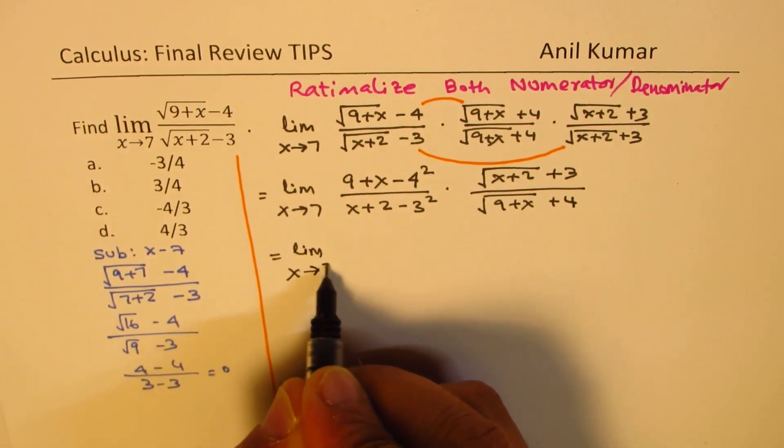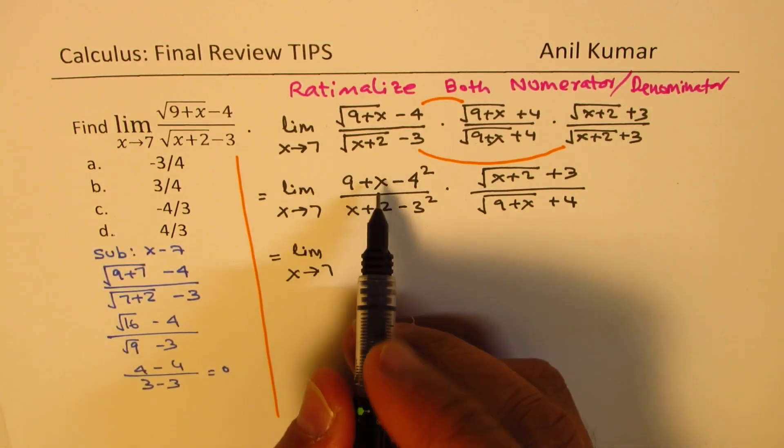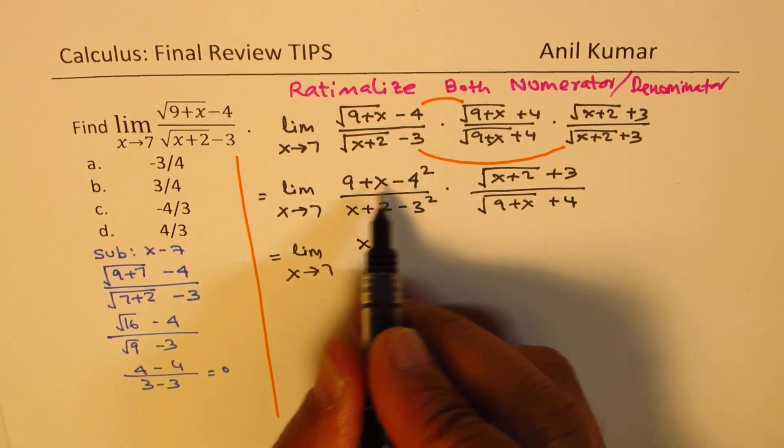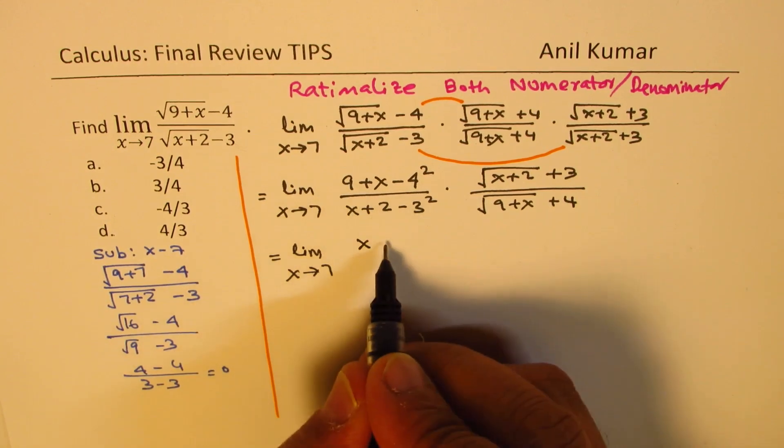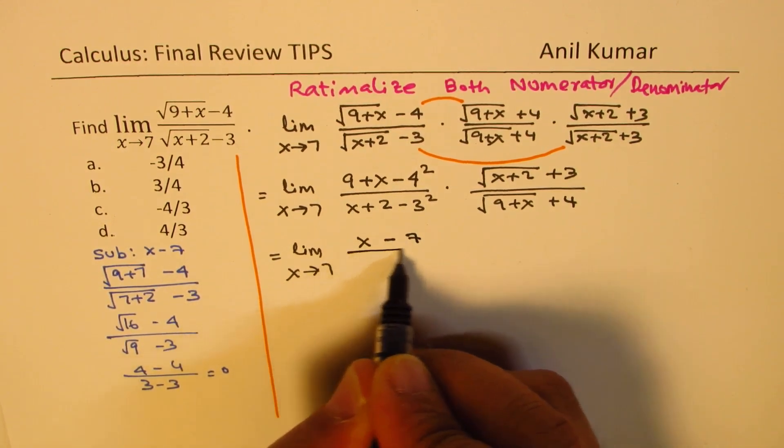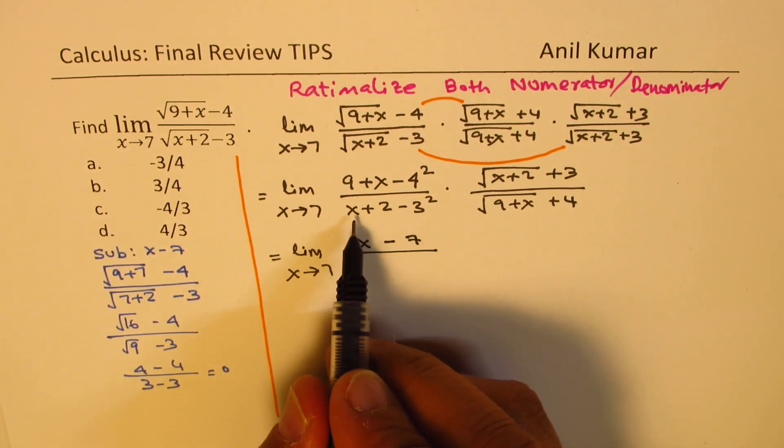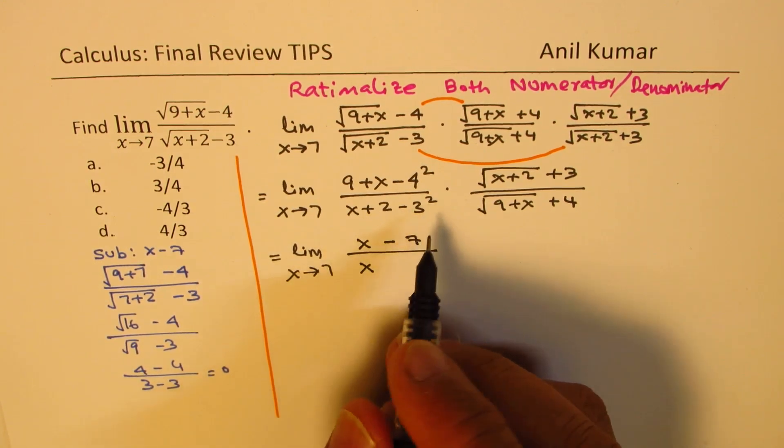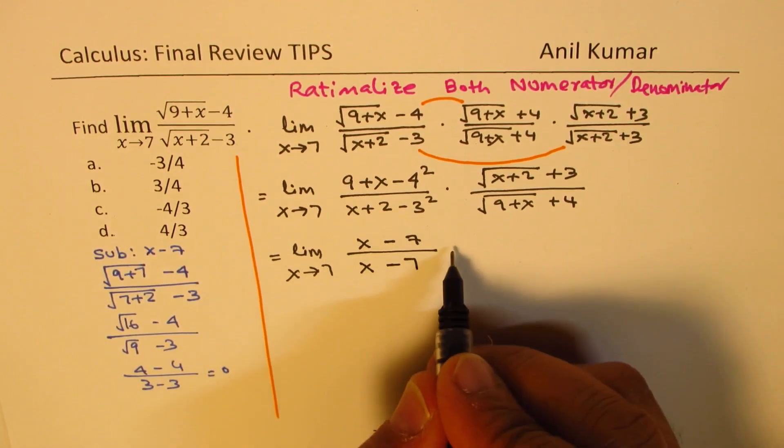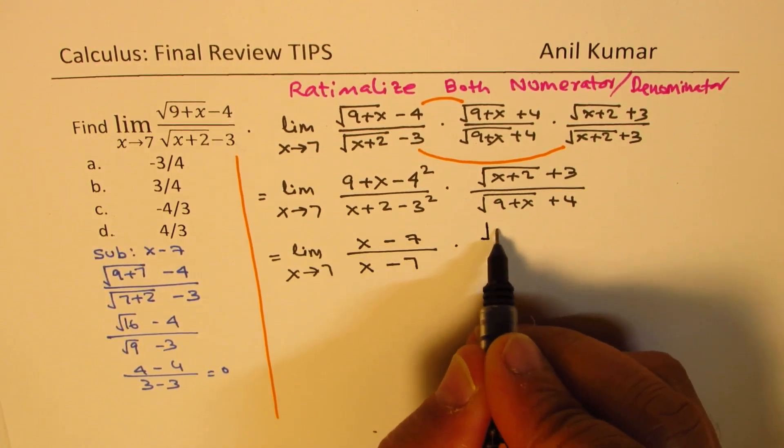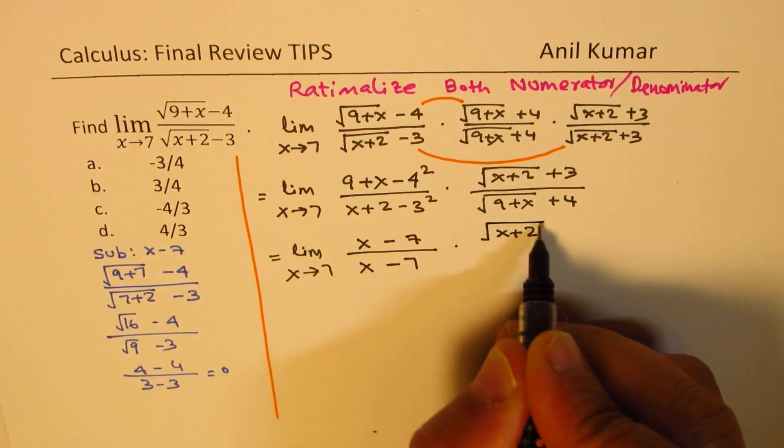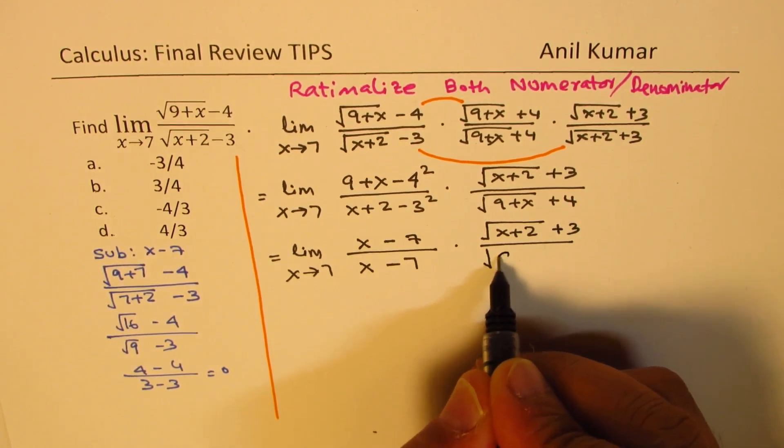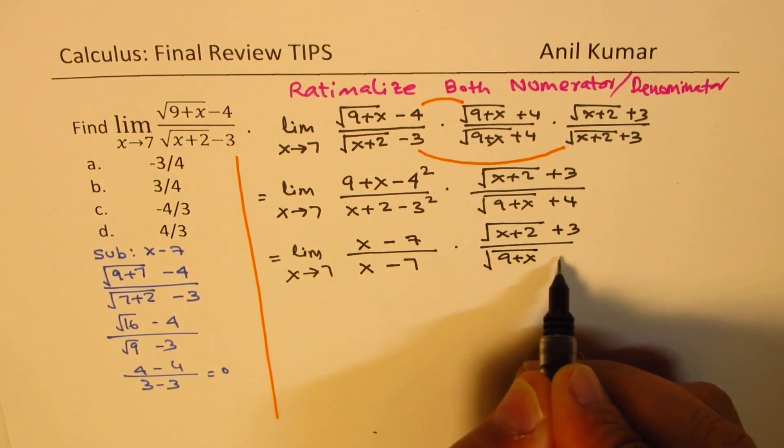Now, simplifying gives us 9, we can write this as x. This is 16. 16 minus 16 plus 9 is minus 7. Here, we have x, 2 minus 9 is also minus 7. And here we have square root of x plus 2 plus 3, divided by square root of 9 plus x plus 4.